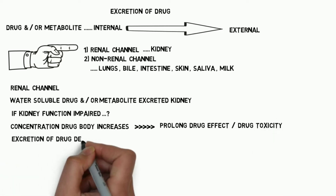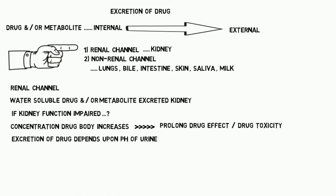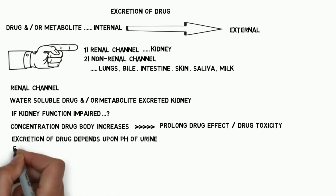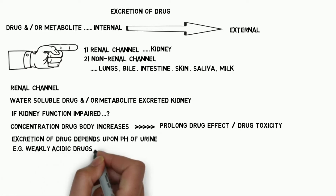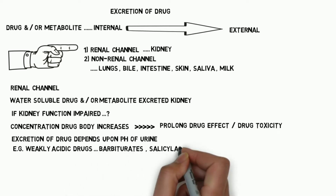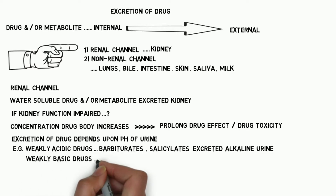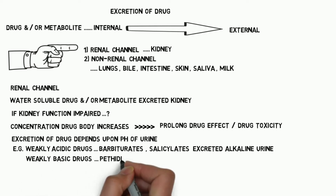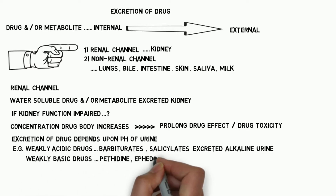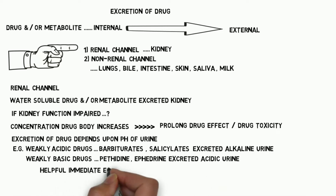The excretion of drug mainly depends upon the pH of urine. For example, weakly acidic drugs such as barbiturates and salicylates are excreted in alkaline urine, while weakly basic drugs such as pethidine and ephedrine are excreted in acidic urine.